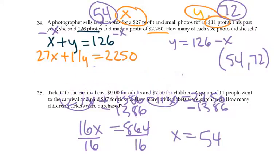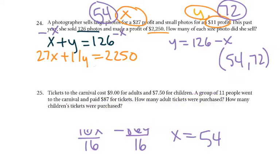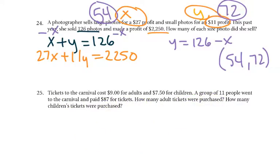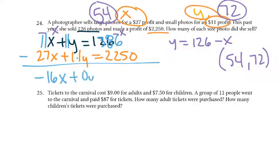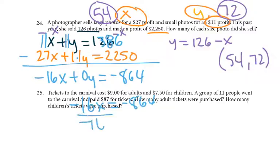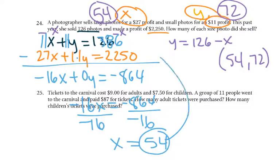We could also have done elimination to solve this one. To do that I'd times everything by 11 to get 1,386. Then 11 and 11 — we'd subtract: 11 minus 27 would be negative 16x, plus 0y, and 1,386 minus 2,250 would be negative 864. So negative 16x equals negative 864. Divide by negative 16, and we end up with x equals 54. Plug that back into an equation and we'd get 72.